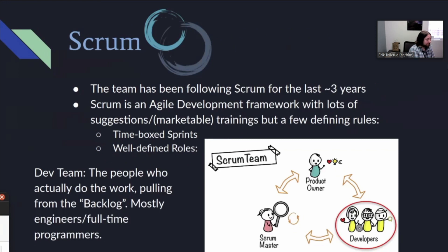The team, before we developed this process, had adopted the methodology called Scrum. I'm going to take a minute to talk about Scrum, even though it's a fairly standard methodology, because I'm sure many of you are not as familiar with it. This team has been following Scrum for the last several years. Scrum is an agile framework with a few particular defining rules that really make it Scrum. One of which is time-boxed sprints — for this team about two weeks — and, really relevant for this discussion, clearly defined roles. The three primary roles are the development team, the product owner, and the Scrum master.